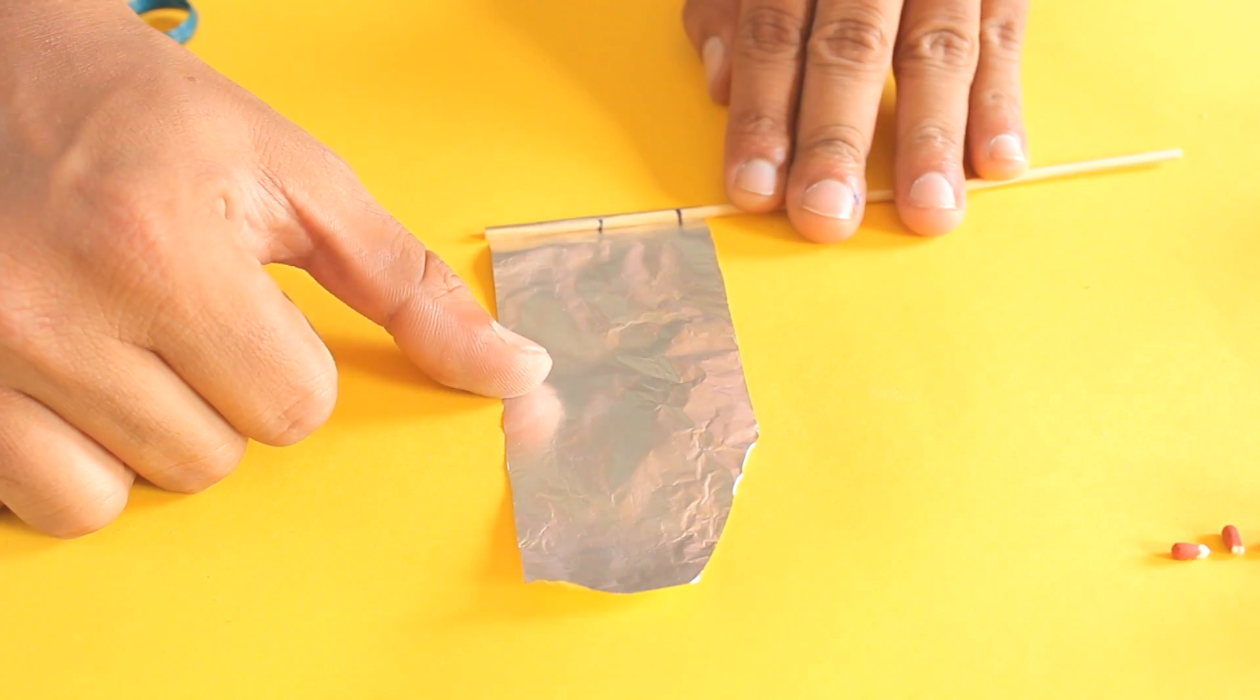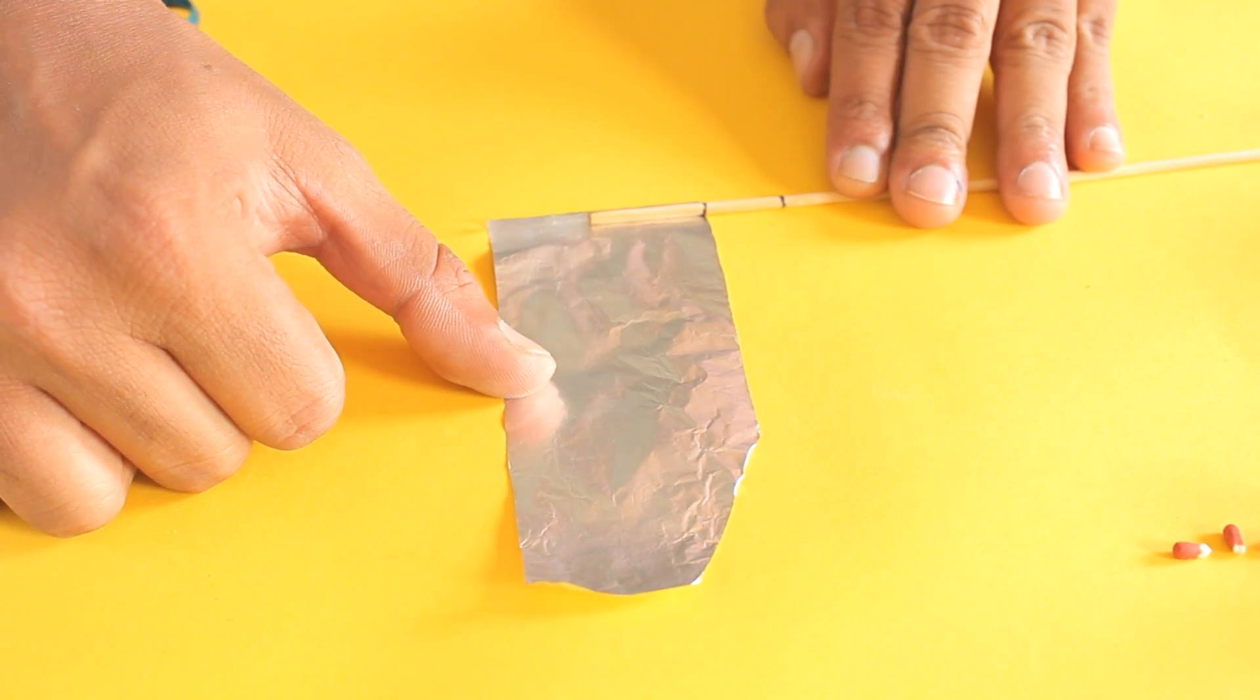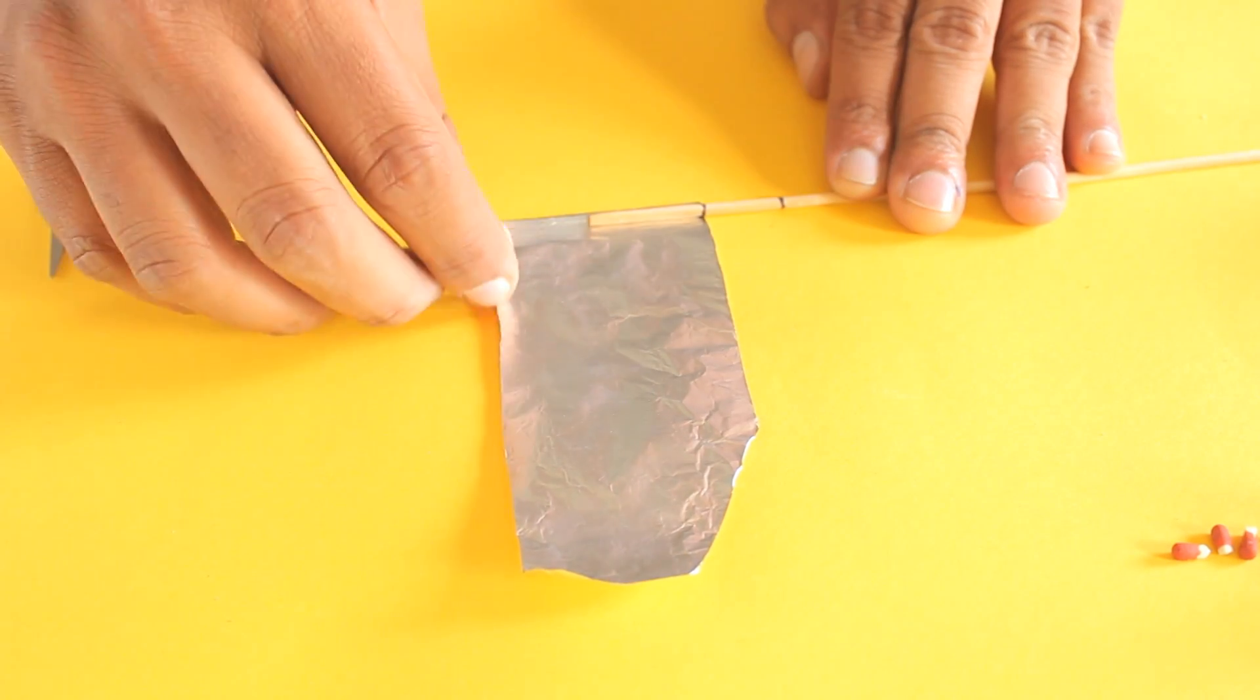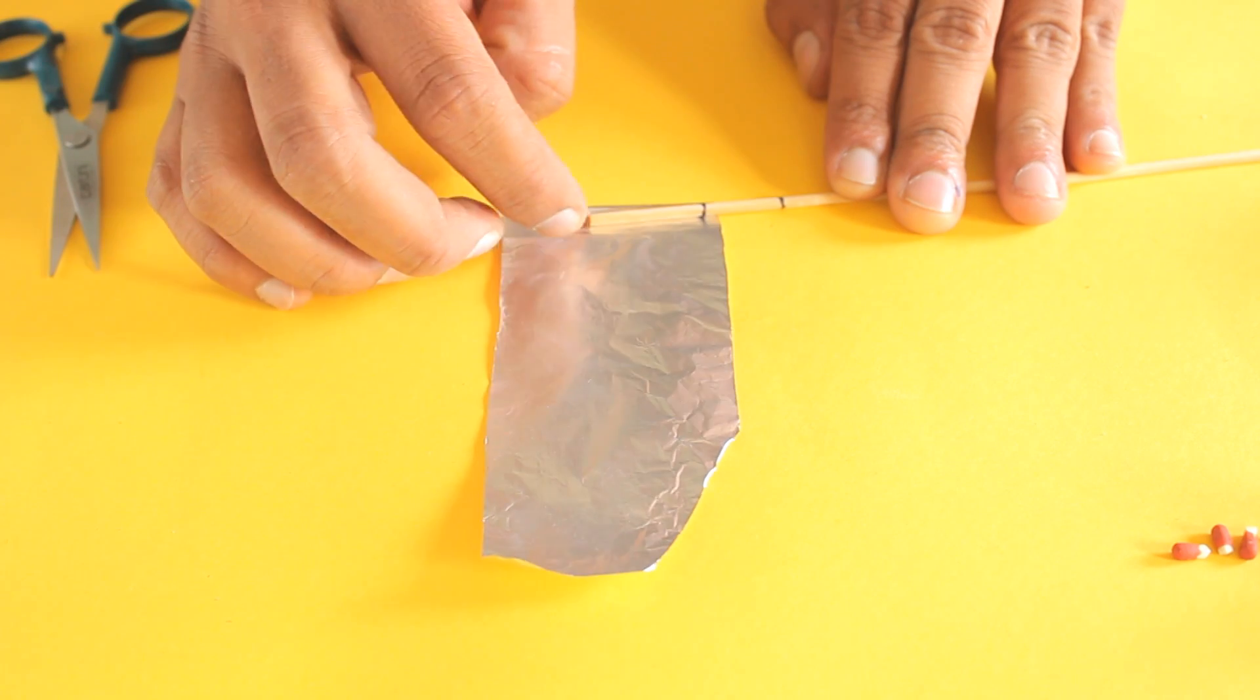Now slightly adjust the position of the wooden skewer as the first mark on the skewer touches the bottom of the foil like this. Place the matchstick head over the wooden skewer and carefully roll the foil.